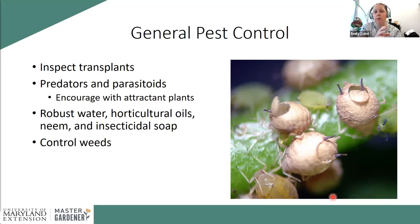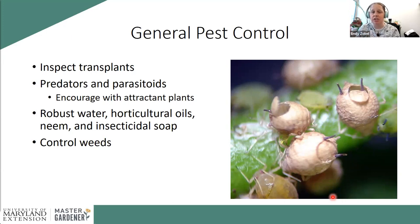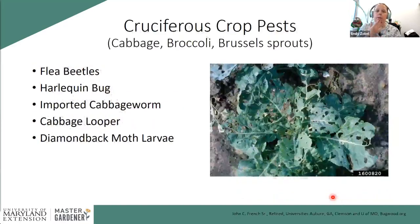I do not recommend using Dawn dish detergent as a control method. It's a detergent, not a pure soap — it has soap plus other additives. Used once or twice it's okay, but studies show repeated application strips the wax coat off plant leaves, making them more susceptible to heat damage and water loss. Insecticidal soap is specifically made for this purpose, so while Dawn is cheaper, true insecticidal soap is the better choice.